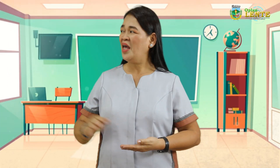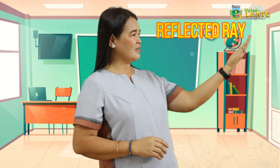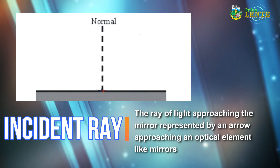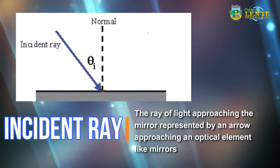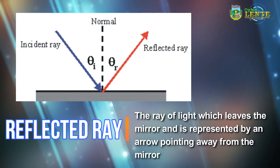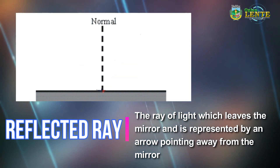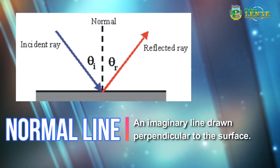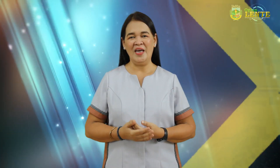First, we have incident ray. Second, we have reflected ray. And the third one is the normal line. Incident ray is the ray of light approaching the mirror, represented by an arrow approaching an optical element like mirrors. Reflected ray is the ray of light which leaves the mirror, represented by an arrow pointing away from the mirror. Normal line is an imaginary line drawn perpendicular to the surface.